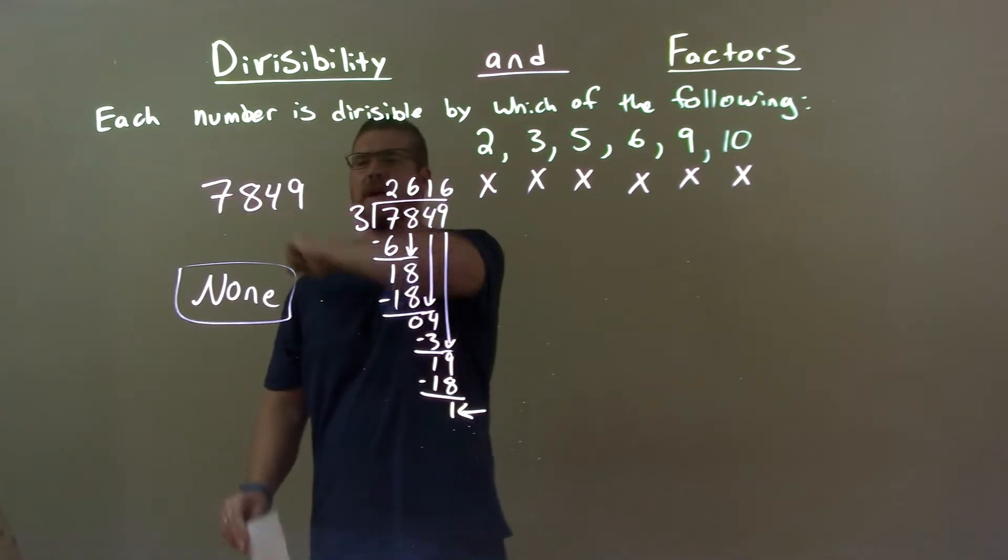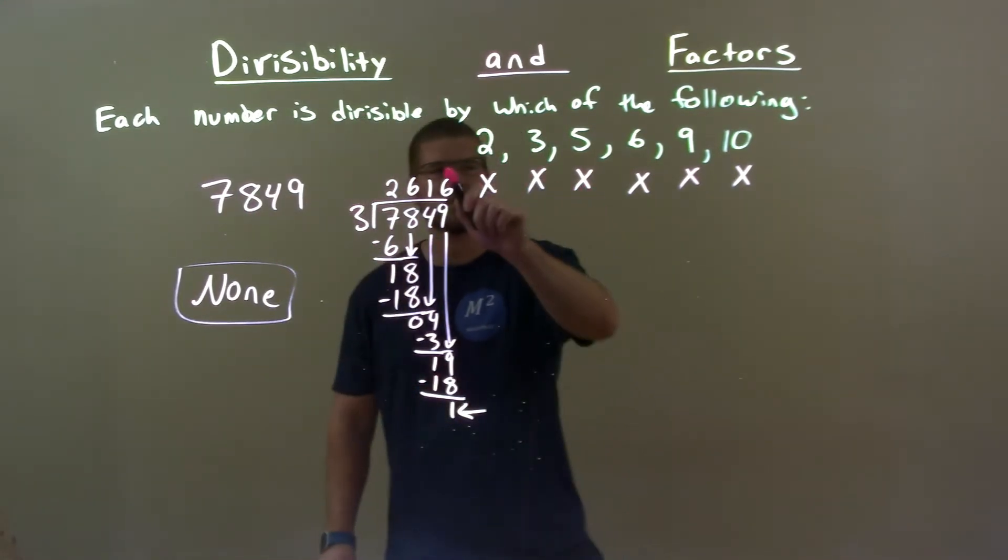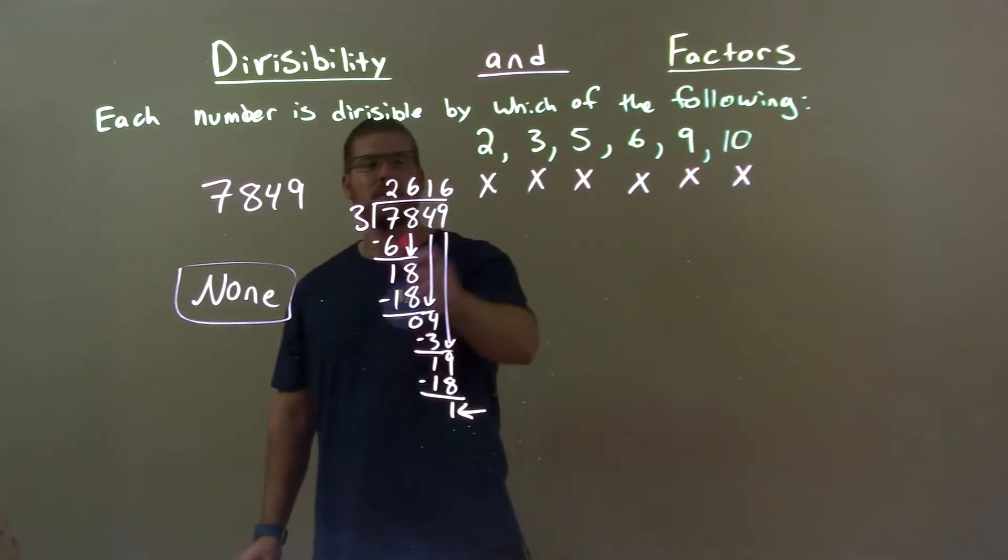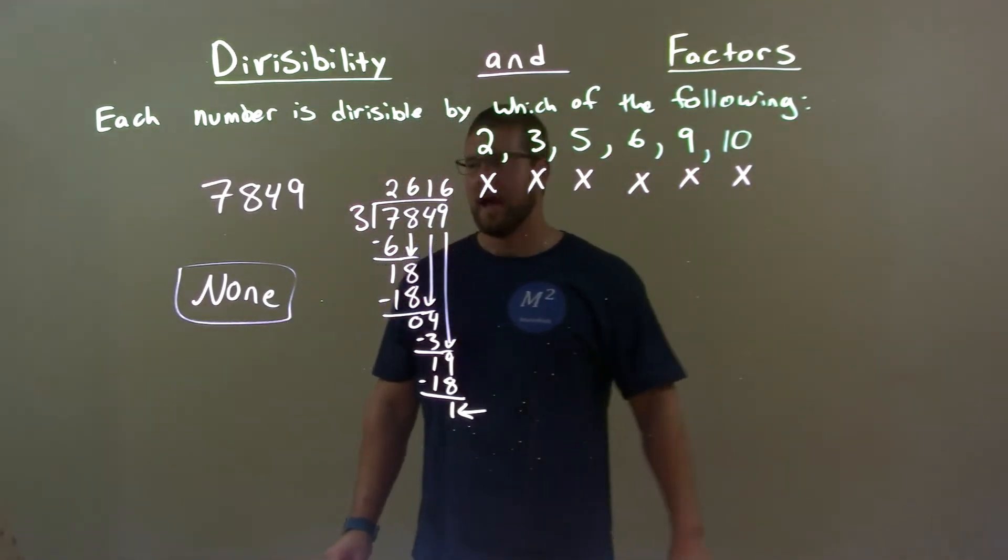Quick recap. We're given 7,849 and we're going to see which one of these numbers goes into it evenly. Well, it's an odd number, so my even ones are out.